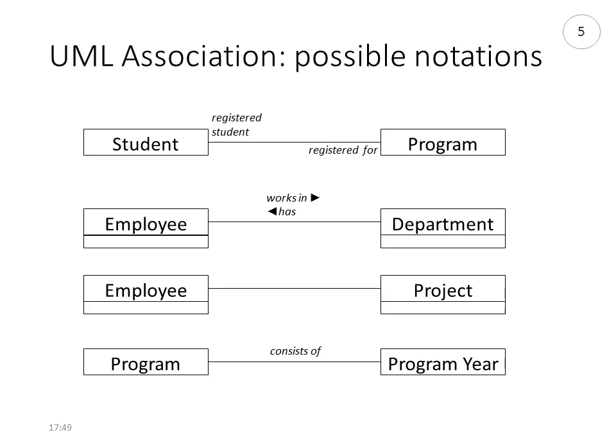It's not mandatory to put role names, so the third example is just a straight line with no role names. The last example is where you use only one role name and the other is implicit — for example, a program consists of program years, but the relationship from program year to program has no name.